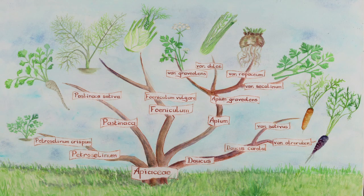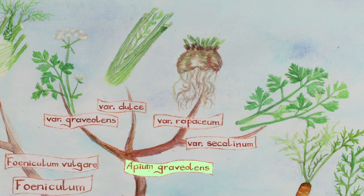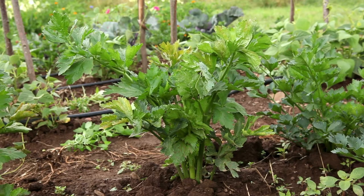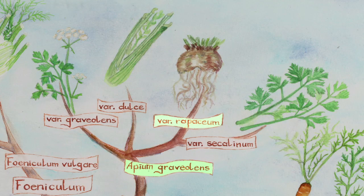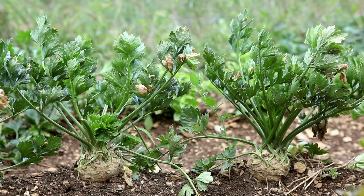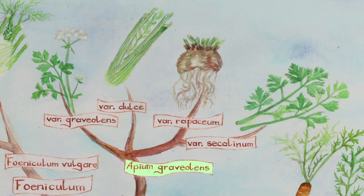Celery belongs to the Apiaceae family and to the Apium graveolens species. It is a biennial plant cultivated for its leaves, roots and stalks. Three subspecies are grown: stalk celery Dulce, celeriac or root celery Rapaceum, and leaf celery Secalinum.